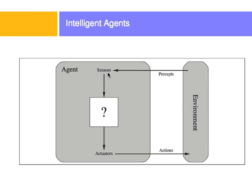An intelligent agent has sensors that get the input to the main routine that determines what it's going to do, and then this routine tells the actuators what to do. In a robot, there are sensors like temperature sensors, light sensors, and GPS. Actuators are the arms of the robot or things it can move to alter the environment. The things sensors can sense are called percepts, and what actuators do are called actions.